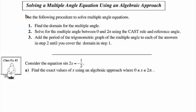We've solved a multiple angle equation using a graphical approach. Now we're going to attempt to solve a multiple angle equation using an algebraic approach, using a modified version of three steps to solve for the multiple angle. Here's example number 2: sine 2x is equal to negative one-half.